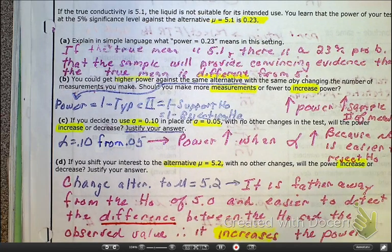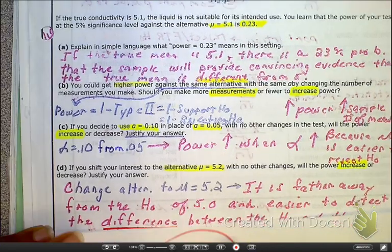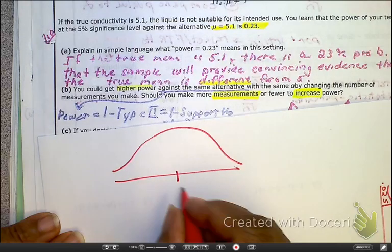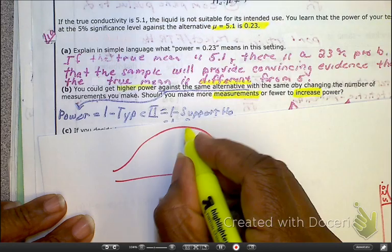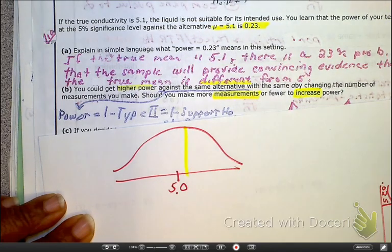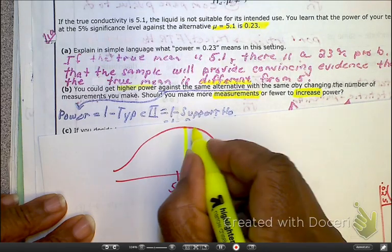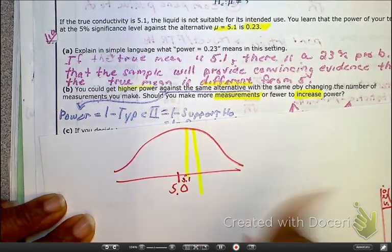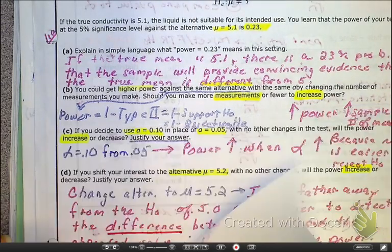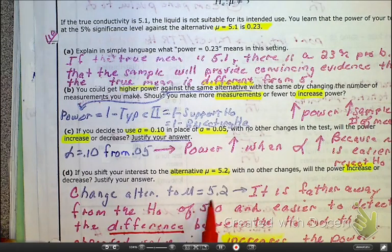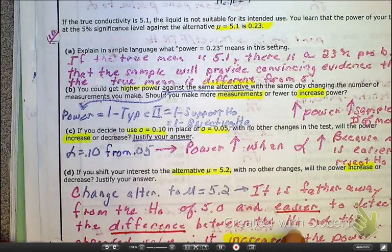So, as I draw a picture here, if the true mean is 5.0, and let's say we have it right here, and let's say I have 5.1. Well, wouldn't it be easier to detect if it was farther away, in which we have 5.2? It's going to be easier to see the difference. So, that's why the farther away the alternative is, the easier it's going to be to see the difference between the H0.